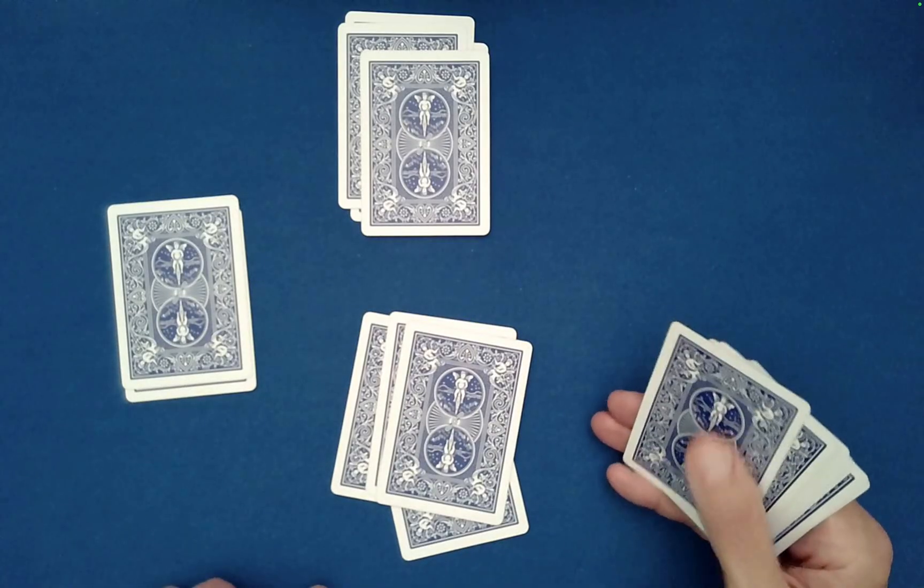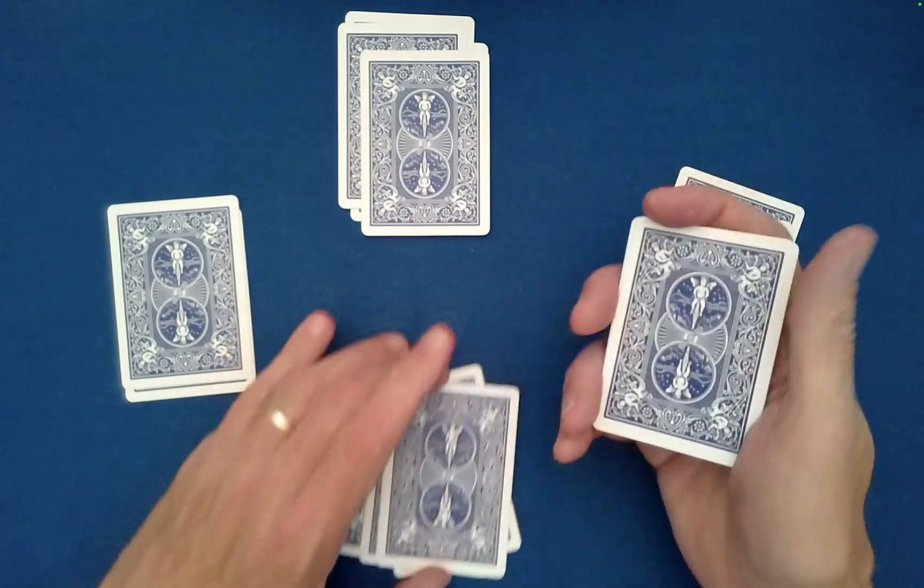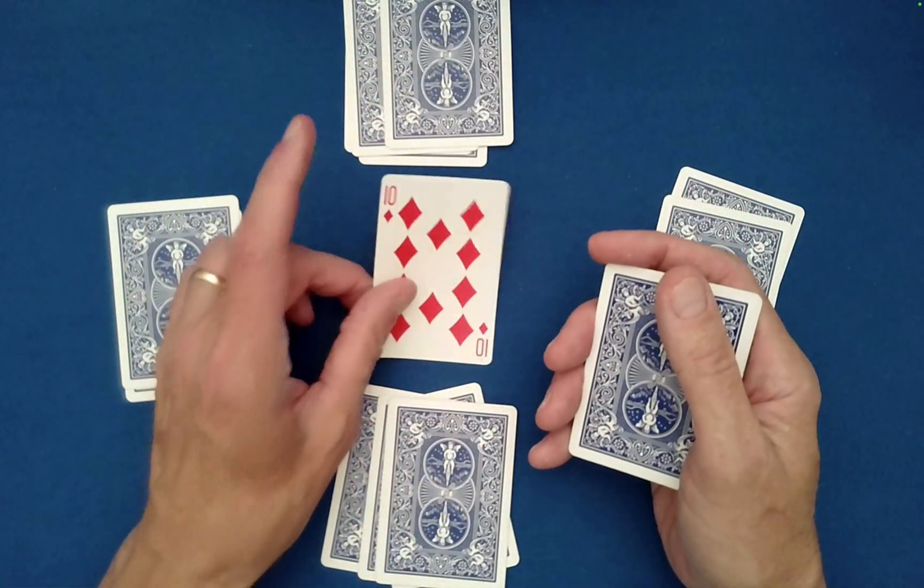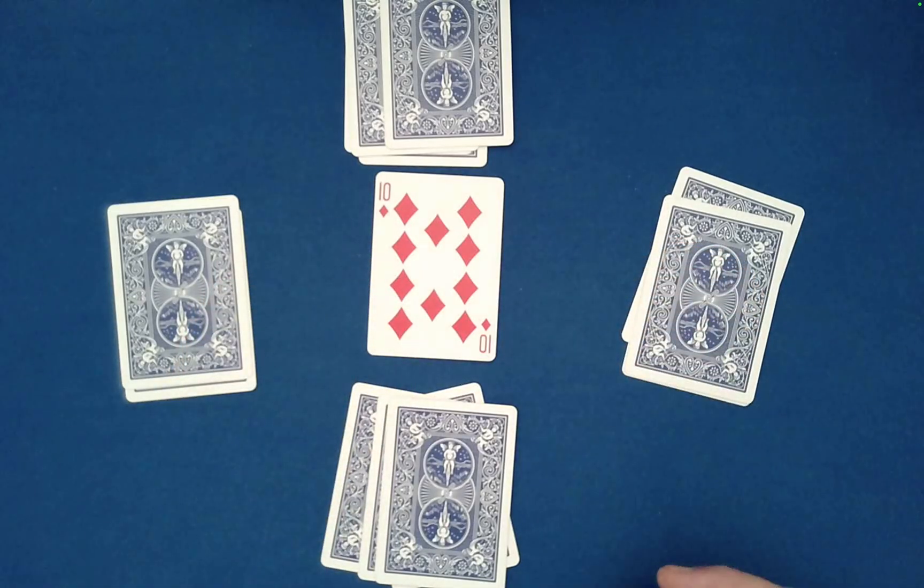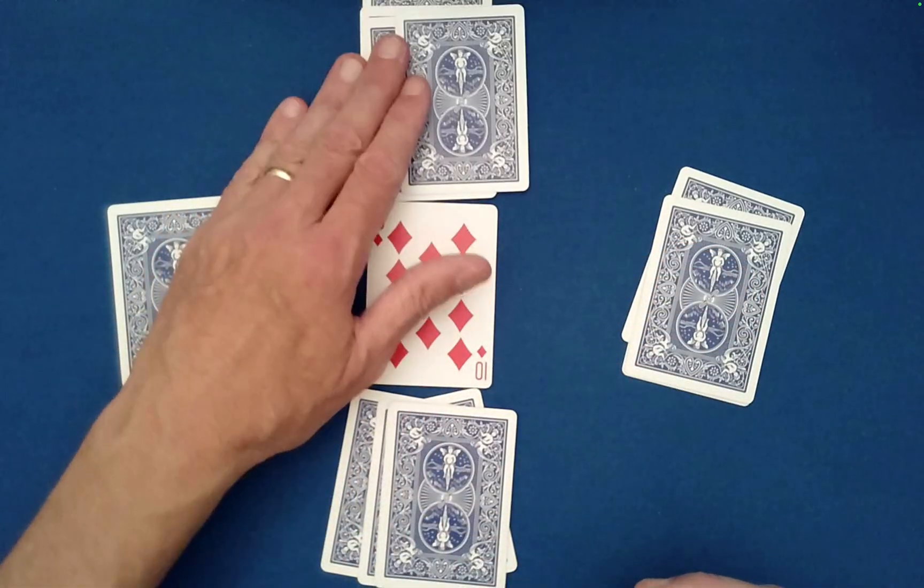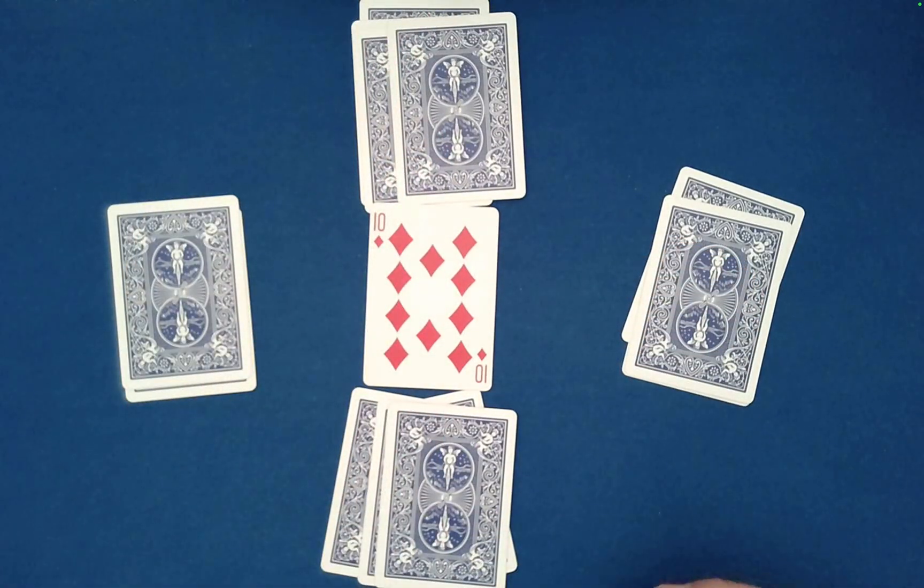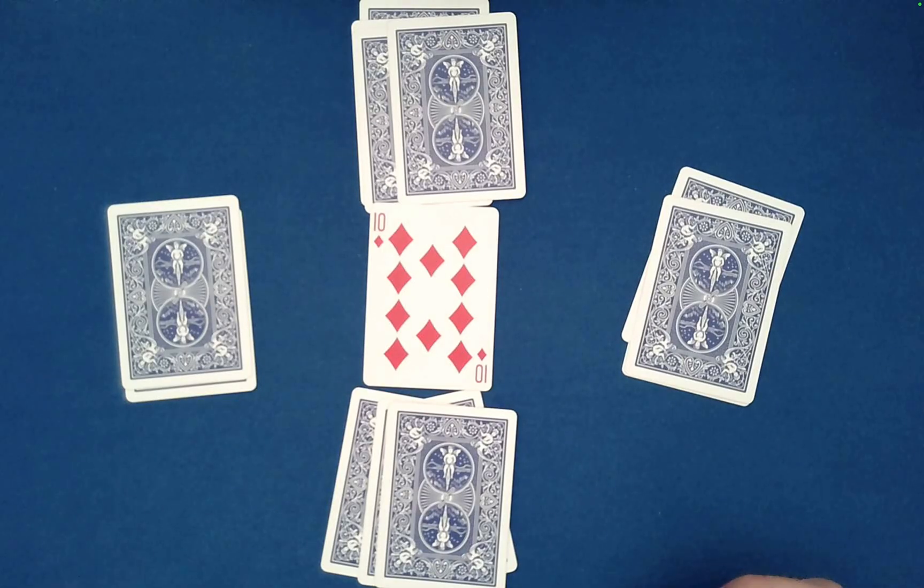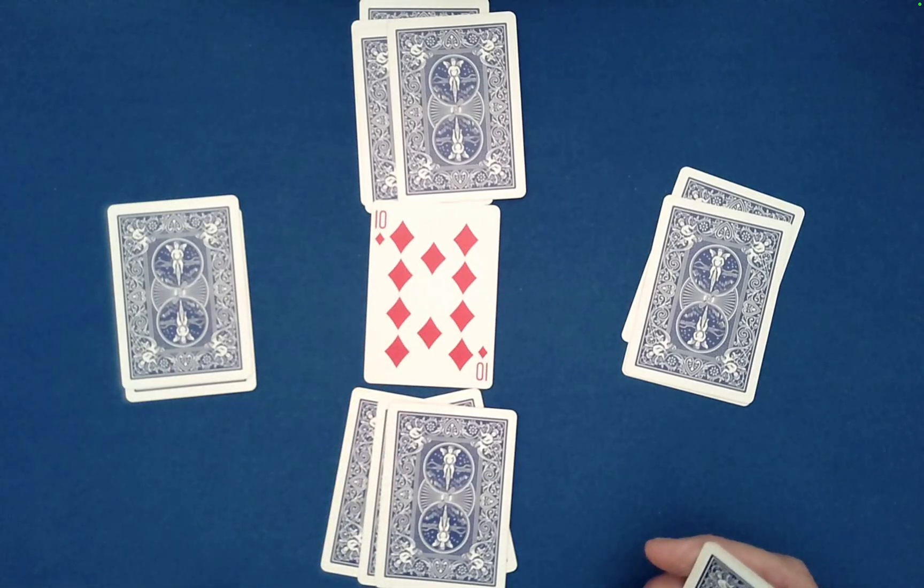Your card is the ten of diamonds. I am so sorry but you have been caught in a lie. Your card was not the three of clubs, it was the ten of diamonds and our ultimate lie detection machine is working perfectly.